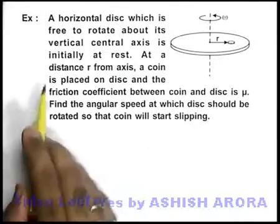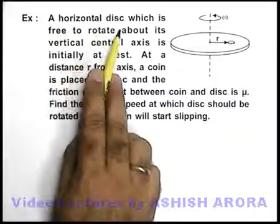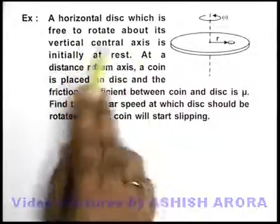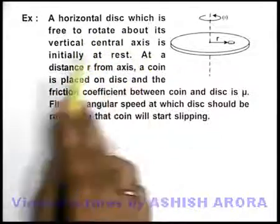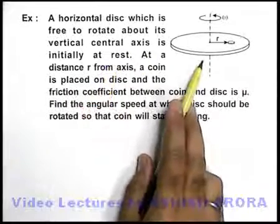In this question, we are given that a horizontal disc which is free to rotate about its vertical central axis is initially at rest. We can see this disc in the figure.